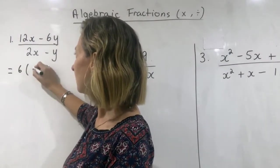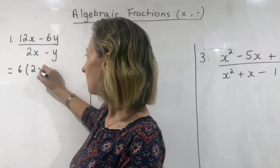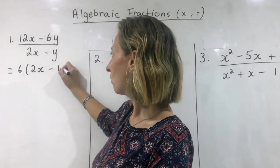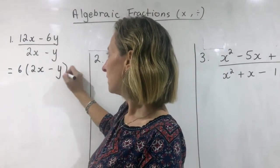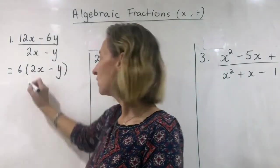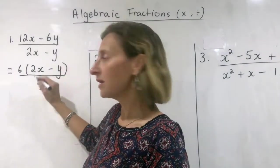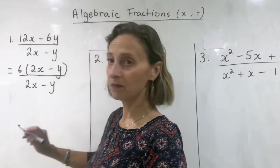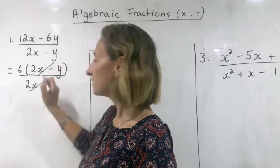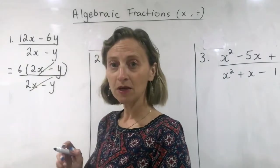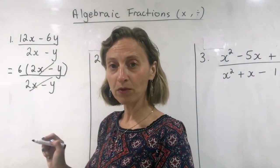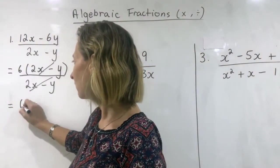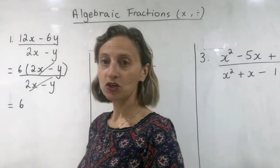There's a common factor of six. Six times two is twelve, and six times one y is minus six y — all over the two x minus y on the bottom, which can't factorise so I just leave it. They cancel because they're exactly the same, and when you have the same thing on the top and the bottom in multiplication, you can cancel. We're left with just six.